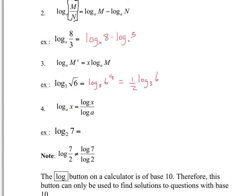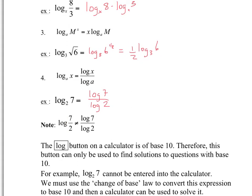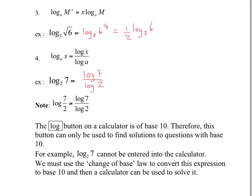The last law is the change of base formula, used to evaluate logarithms with an unfamiliar base. You can change log base a of x to log of x divided by log of a, both in base 10. So log base 2 of 7 equals log 7 divided by log 2. A common misconception: log of 7 over 2 is NOT the same as log 7 over log 2. Log of 7 over 2 equals log 7 minus log 2 by the quotient rule.